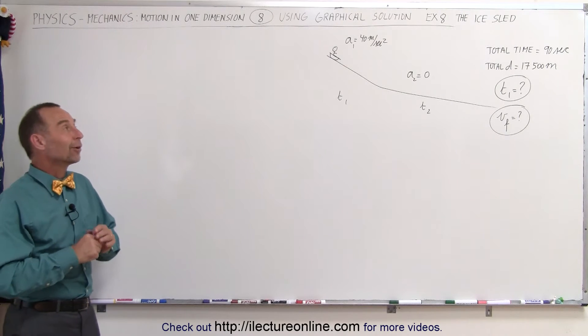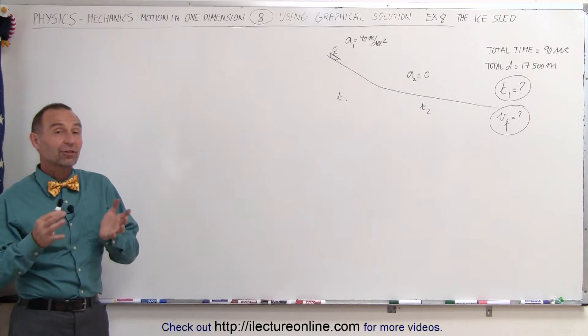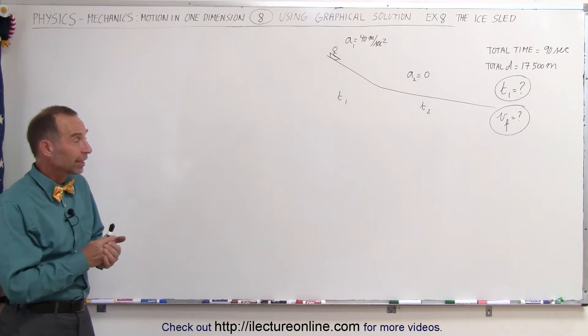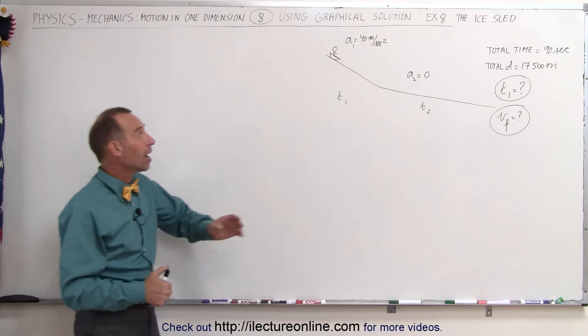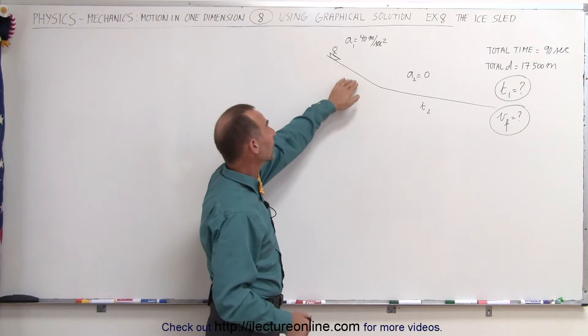Welcome to ElectronLine. Here's our next example of how to solve physics problems in one dimension using graphical techniques. We have a daredevil on a sled coming down a mountain.